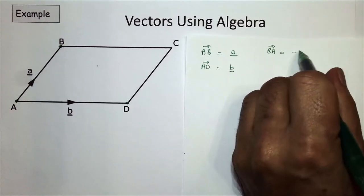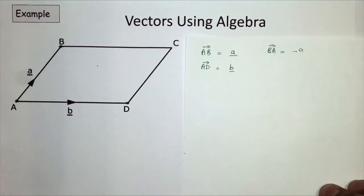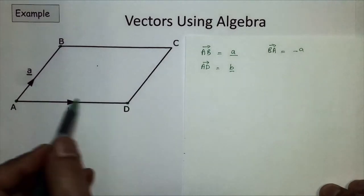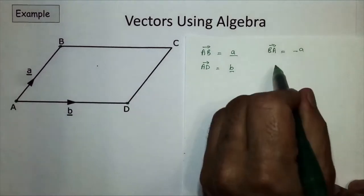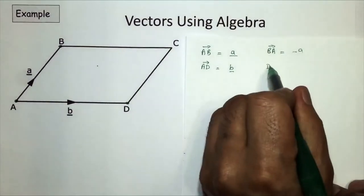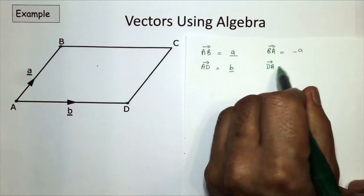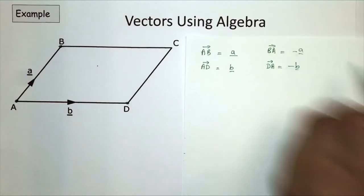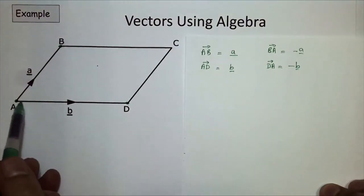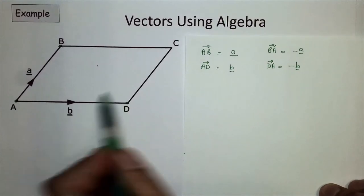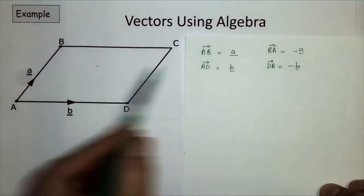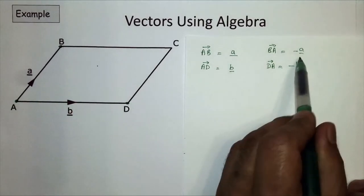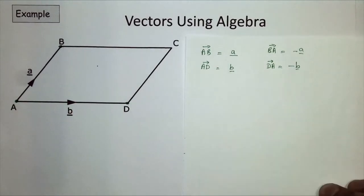So B to A is minus a, and to go from D to A is equal to minus b. Going in the direction of the arrow will be a positive vector; going in the opposite direction to the arrow, it will be a negative vector.